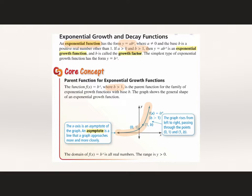Exponential growth rises from left to right — it gets exponentially bigger as x gets bigger. So as the x value increases, the y value increases big time. We also have an asymptote here. For our parent function, the asymptote would be at 0. Our graph gets really, really close to our asymptote but never touches.